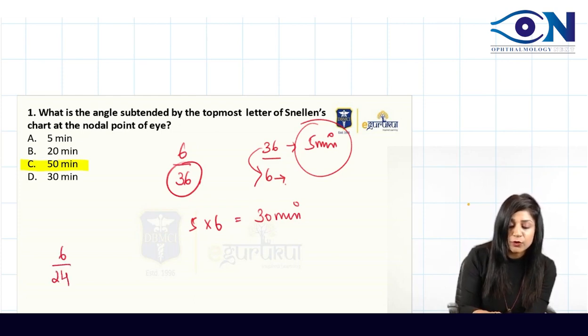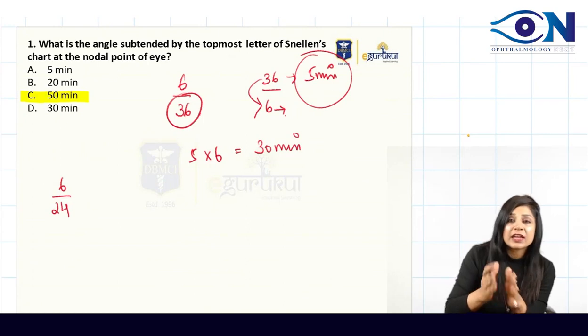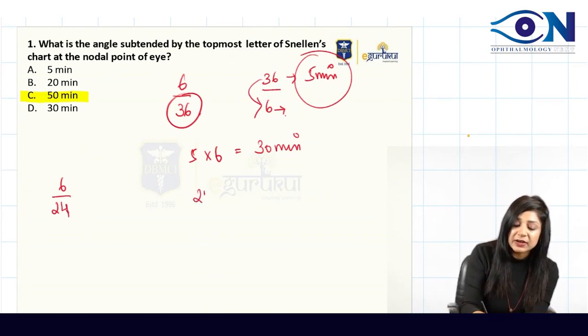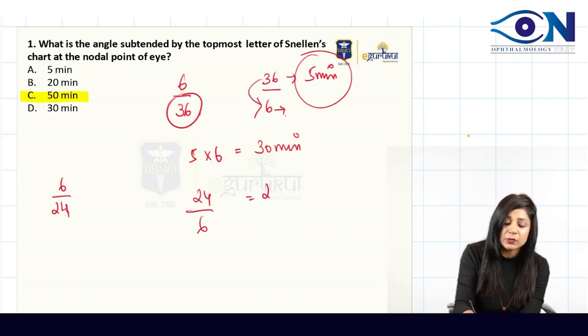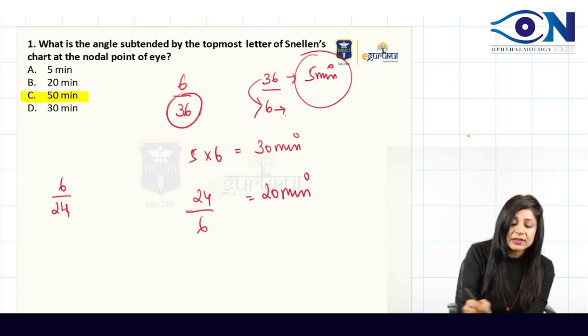Similarly, if I talk about 6/24, how much distance is decreasing? 24 by 6, this is 4. 5 into 4, that will be 20 minutes.